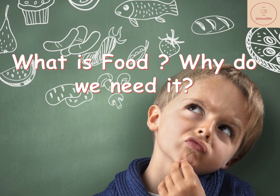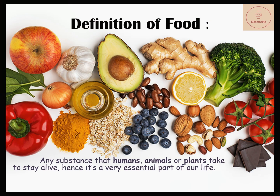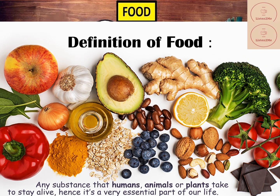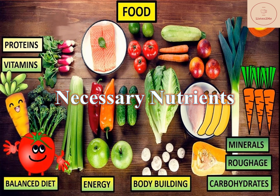First of all, what is food and why do we need it? The general definition of food is any substance that animals or plants take to stay alive. So it is a very essential part of life. This also answers our next question — why do we need food? That is, primarily to stay alive. Food also provides necessary nutrients required for our body. What are nutrients and its types, we will learn in future chapters.